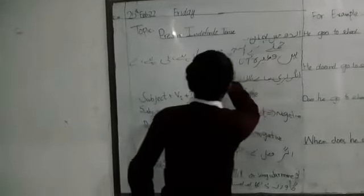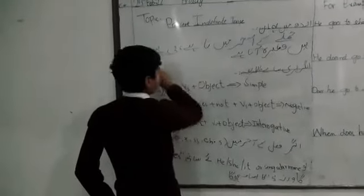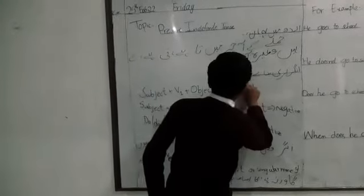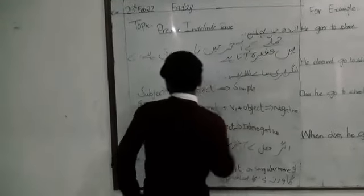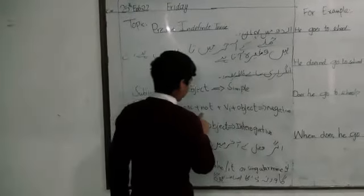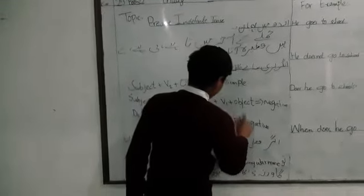When you have a verb, you can create: Affirmative - subject plus V1 plus object. Negative - subject does not plus V1 object. Interrogative.